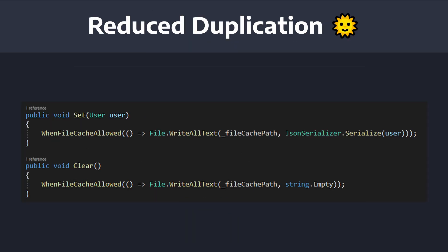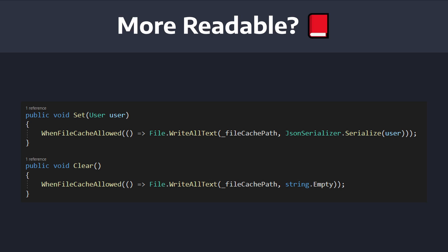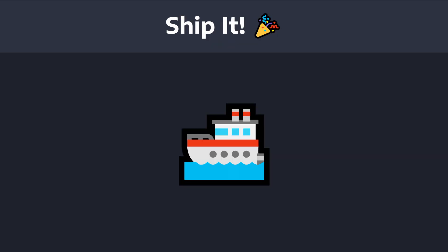Not only did we reduce duplication, but we ended up with a very readable solution. As we can see with this code, we can read it like a book: when the file cache is allowed, we write the text to the file. Reduced duplication, made a readable solution — I was pretty satisfied, and I committed.